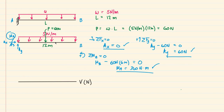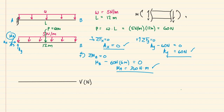Now that we have our reactions, we can start drawing the shear diagram. Before we do, let's note our positive internal shear and moment sign convention. For a beam element, positive shear is downward on the right face and upward on the left face. Positive moment bends the beam into a smiley face shape. Any external load is positive when acting upward. This is our sign convention for shear, moment, and external loads.